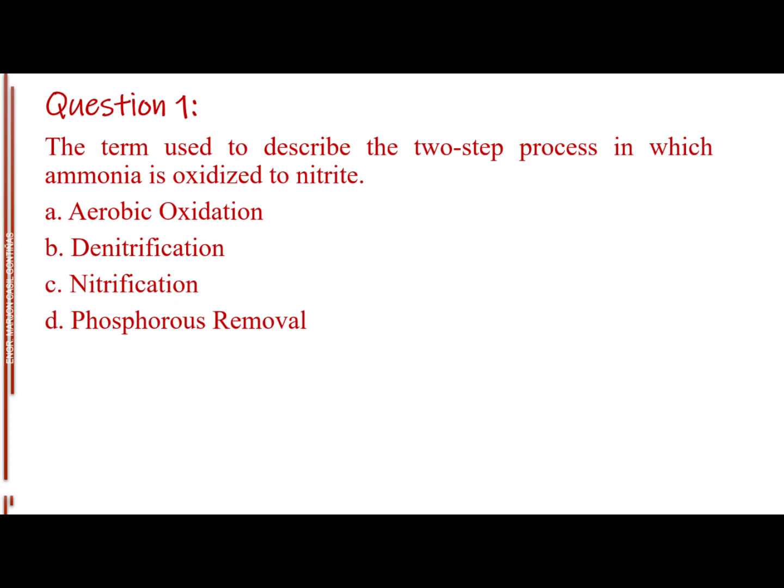Question number 1. The term used to describe the two-step process in which ammonia is oxidized to nitrite. Letter A, aerobic oxidation. Letter B, denitrification. Letter C, nitrification. Letter D, phosphorus removal. The answer is Letter C, nitrification.